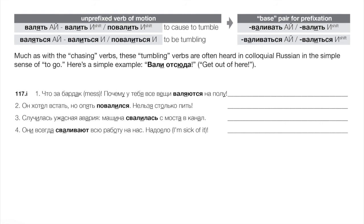Now transitive without the particle: сваливать/свалить — to make something tumble down. «Они всегда сваливают всю работу на нас» — they always dump all the work onto us. This is basically the Russian verb for dumping — like a dump truck. Literally it means to make tumble down, but in English we say they dump everything in our laps — сваливают всю работу на нас.